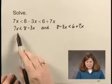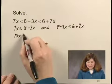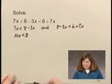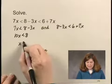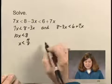We'll add 3x to both sides of the equation here, and we get 10x is less than 8. Dividing both sides by 10, we have x is less than 8 tenths or 4 fifths. That must be true.